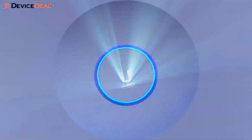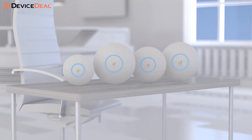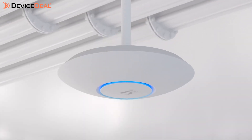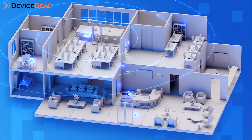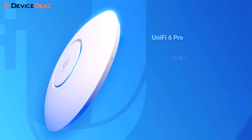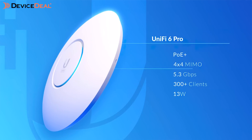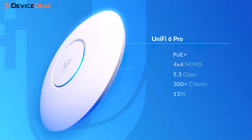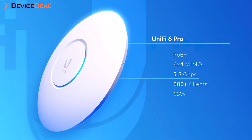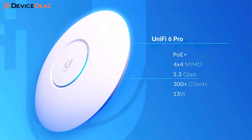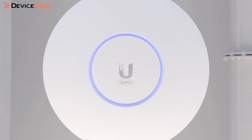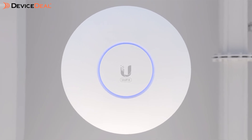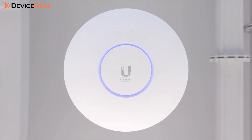UniFi offers a wide variety of U6 series models, each optimized for specific environments and performance needs. The U6 Pro is recommended for large office spaces, offering robust Wi-Fi 6 performance and supporting up to 350 clients or devices. It features 4x4 MIMO at 5 GHz and 1,500 square feet of coverage, ensuring every corner of your workspace is connected.